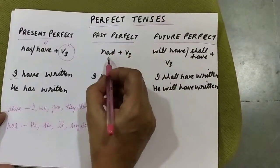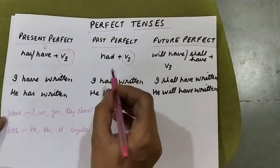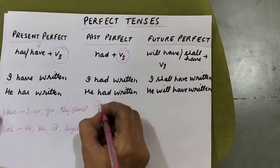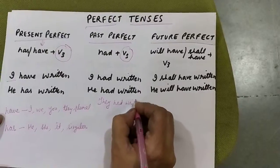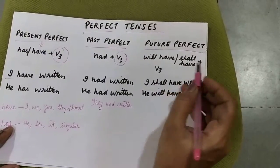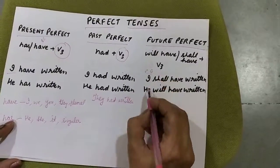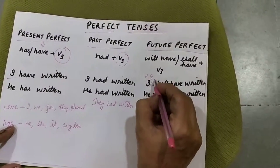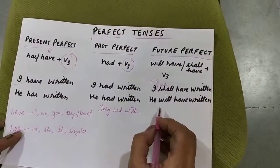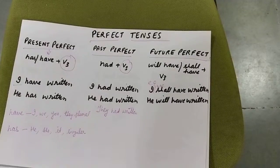In past perfect, we use 'had' plus the third form of the verb. We use 'had' whether it is a singular or plural subject. Like 'I had written', 'he had written', or 'they had written'. Now we will move on to future perfect. Here we use 'will have' or 'shall have' depending upon the subject, with the third form of the verb. For example, 'I shall have written', 'we shall have written', 'he will have written', or 'she will have written'. 'Will' goes with he, she, it, and 'shall' goes with I, we, you, they. This is all about the tenses. Thank you.